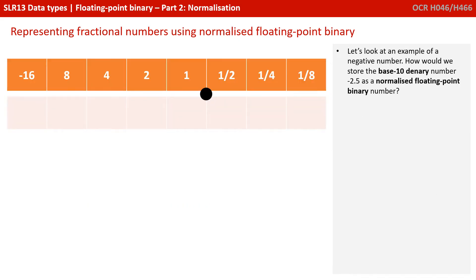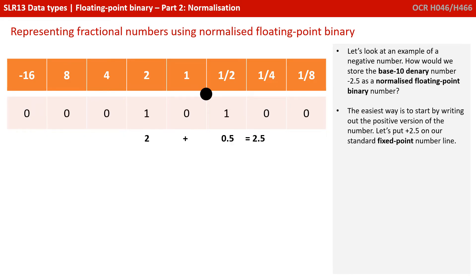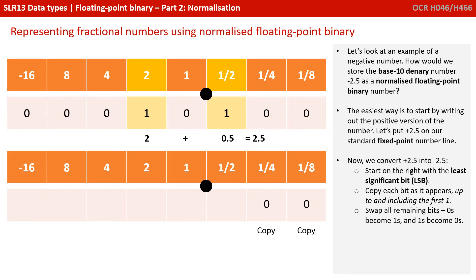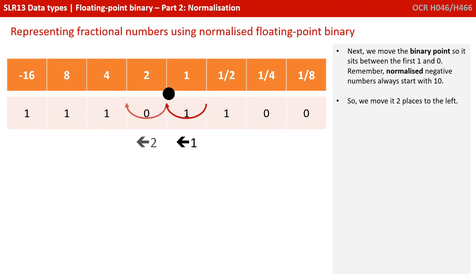Let's look at an example of a negative number. How would we store the denary number negative 2.5 as a normalised floating-point binary number? The easiest way is to start by writing out the positive version — so that's positive 2.5: a 1 in the 2 column and 1 in the half column. Now we convert 2.5 to minus 2.5. You start on the right-hand side with the least significant bit and copy each bit as it appears up to and including the first one, then all the other bits you swap — zeros become ones and ones become zeros.